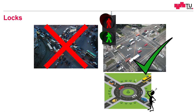Think of a roundabout, which would represent a lockless implementation of the crossroads. Here we don't have traffic lights. But if we think a little bit deeper, we just made the resource smaller — instead of having one big resource, we have four smaller ones in this case.